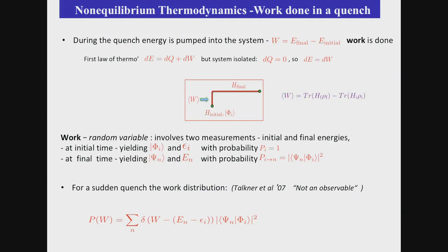Okay, so one has many, many questions. I will focus on a particular question. What is the work done when you quench the system? So as you quench the system, you pump in a lot of energy into it in the form of work. So work is typically E final minus E initial. Remember that the system is isolated, so there is no heat flowing. But what is work in a quantum system?